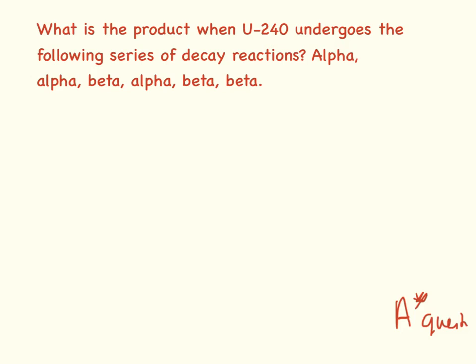And now a really hard and nasty question for you. What is the product when uranium-240 undergoes the following series of decay reactions? Alpha, alpha, beta, alpha, beta, beta. So uranium-240 has a mass of 240 and uranium's atomic number is 92. So we minus alpha, 4 and 2.